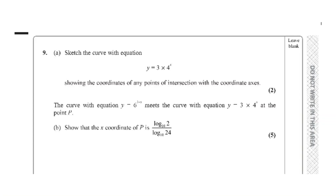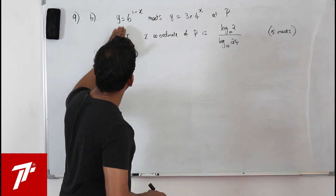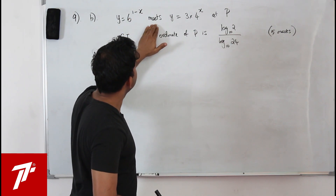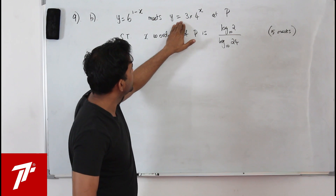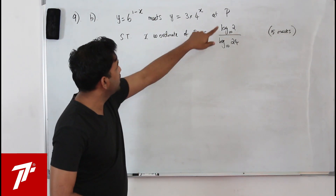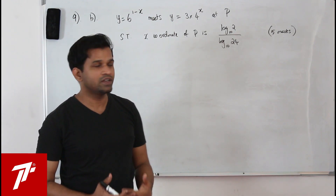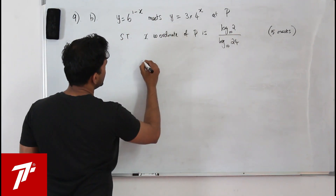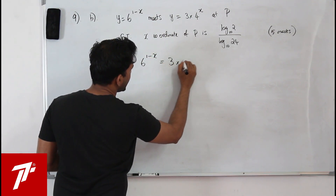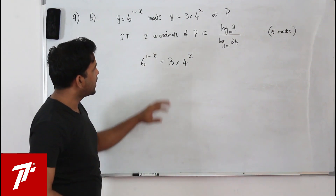Part B: the curve with the equation y equals 6 to the power 1 minus x meets the curve y equals 3 times 4 to the power x at the point P. Show that the x coordinate of P is log 2 upon log 24 to the base 10. To find the point of intersection, we equate them: 6 to the power 1 minus x equals 3 times 4 to the power x, and find the value of x.